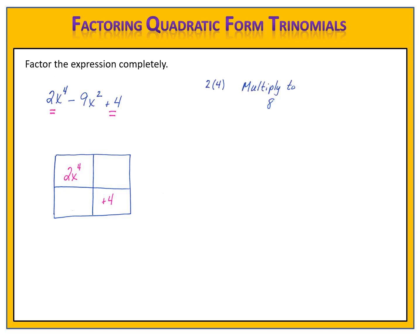I need to figure out what goes in the other two boxes. 2 times 4 is 8, so I need numbers that multiply to 8. The middle term is negative 9, so I need numbers that add to negative 9. Numbers that multiply to 8 are 1 times 8 and 2 times 4, also negative 1 times negative 8 and negative 2 times negative 4. The pair that adds to negative 9 is negative 1 and negative 8. Because the middle term has x squared, I'll use x squared on each when placing them in the grid. It's important that you include the x squared, or this process will not work correctly.